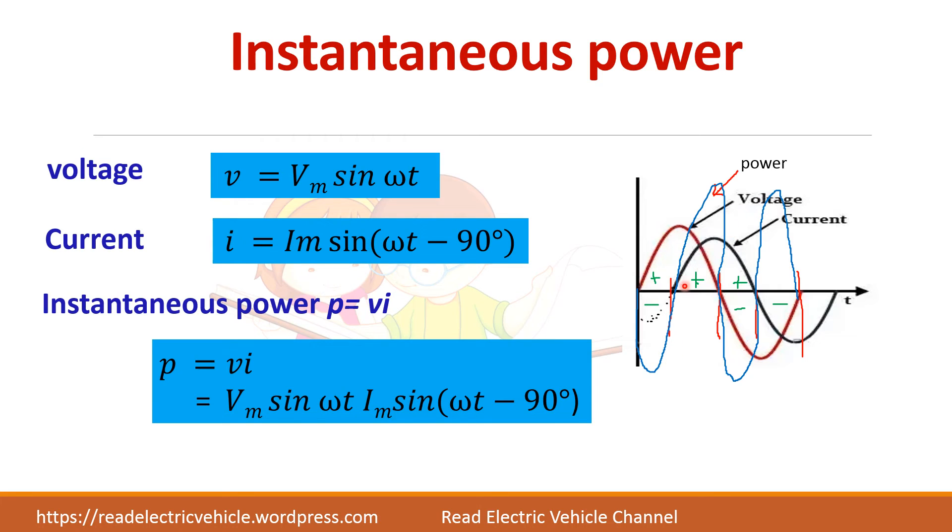Let us see how you are getting the average power as zero. That is, if the circuit or the inductance is a pure inductance, that is without any resistance, then the average power will be equal to zero.